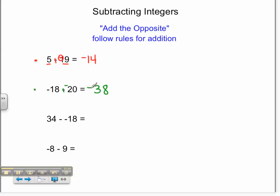For the next problem, 34 minus negative 18. I see it's a subtraction problem, so I'm going to make it an addition problem, and I find the opposite of negative 18. The opposite of negative 18 is positive 18.